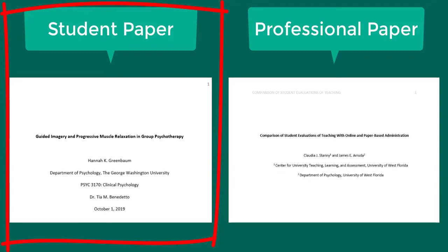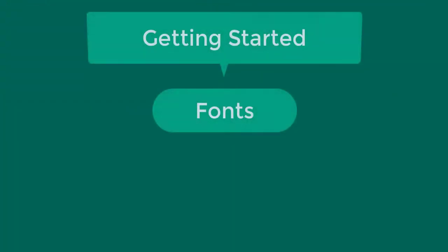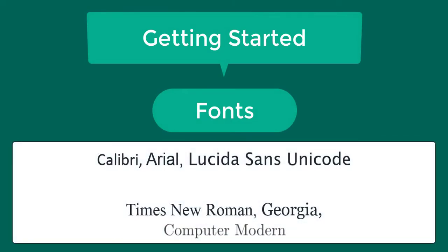We'll talk about the student version of APA papers here. Papers in APA format include sans serif fonts such as 11-point Calibri, 11-point Arial, or 10-point Lucida Sans Unicode. Papers can also include serif fonts such as 12-point Times New Roman, 11-point Georgia, or 10-point Computer Modern.